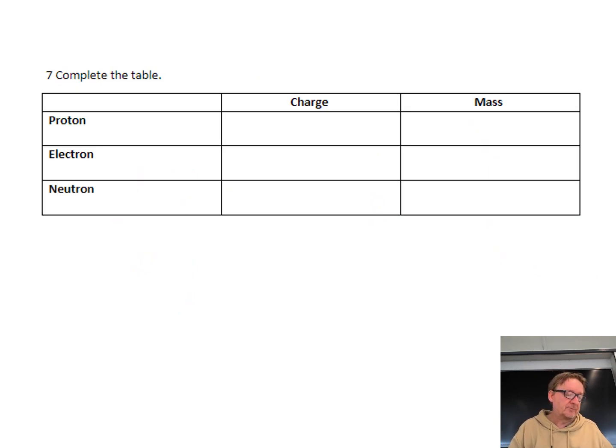Complete the table: protons, electrons, and neutrons. Charge on a proton: plus one. Charge on an electron: minus one. Charge on a neutron: nothing, it's neutral. The mass of a proton is one, the mass of a neutron is one, and the mass of an electron is zero or negligible.